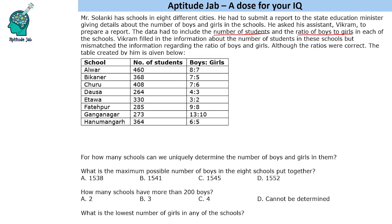Vikram filled the information about the number of students in these schools but mismatched the information regarding the ratio of boys and girls — though the ratios themselves were correct. So this means these are the number of students, but the ratios are not matching. For example, 8:7 will not be applicable to ULBUR; it will be applicable to some other school. What we have to do is match these and then answer the questions.